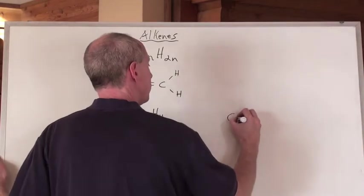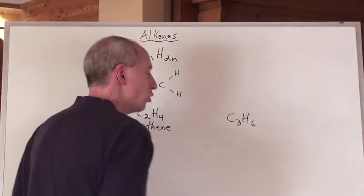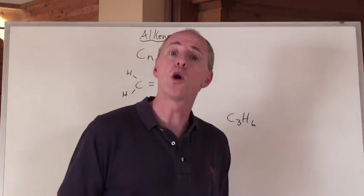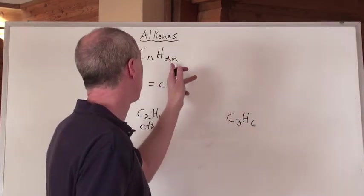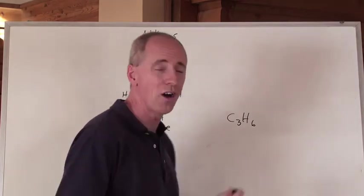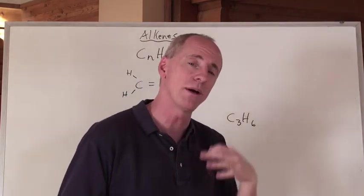Now if I said, well, here's C3H6, draw that. Well, that's propene because there's three carbons and there's going to be a double bond and I can tell that by this general formula, CnH2n. Although this could be a cyclocompound, we'll talk about it later.